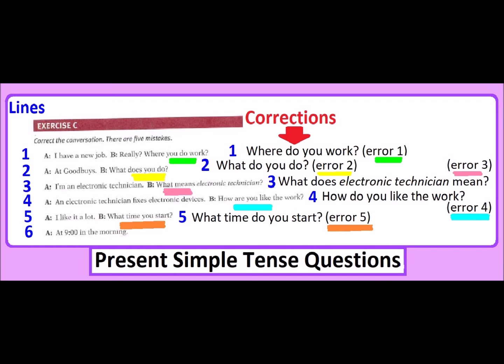In number three line, they made question incorrectly: WHAT MEANS ELECTRONIC TECHNICIAN is not correct. WHAT DOES—we need to have auxiliary again in third person. WHAT DOES ELECTRONIC TECHNICIAN MEAN? WHAT DOES IT MEAN? This question is in third person singular. What does—instead of IT, this object here is ELECTRONIC TECHNICIAN. What does electronic technician mean? This is this kind of question. So we are correcting it.